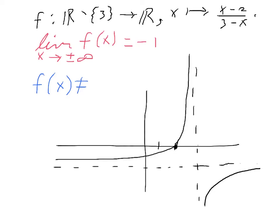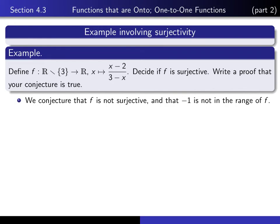And so that pretty much tells us the answer to our question. f(x) is never equal to minus 1 for any x. And so our conjecture is that this function is not surjective. It doesn't take all real values. It omits the value minus 1.